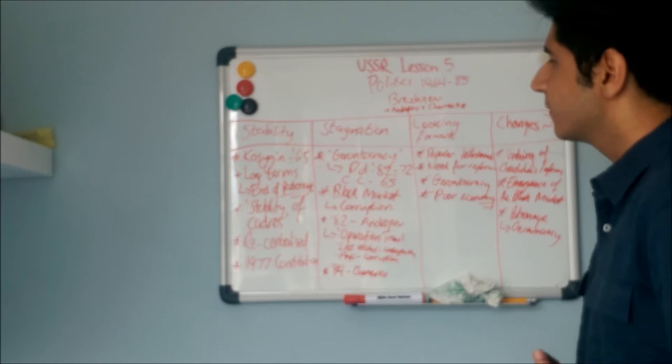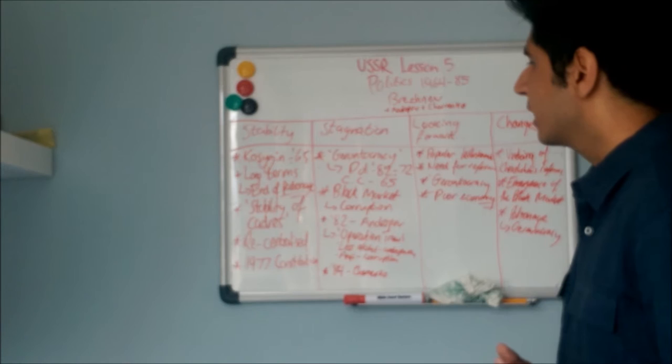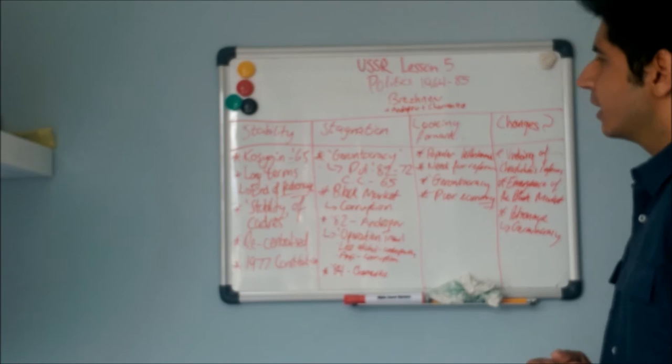By 1965, Kosygin isn't really part of the dynamic anymore. He's just left Brezhnev to lead by himself.